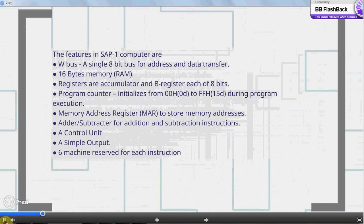The features in SAP-1 computer are: W Bus, a single 8-bit bus for address and data transfer; 16 bytes memory RAM; registers are accumulator and B register, each of 8 bits; program counter initializes from 00H to FFH 15D during program execution.